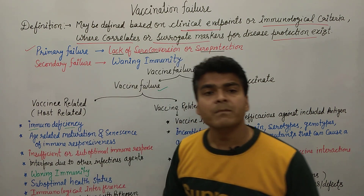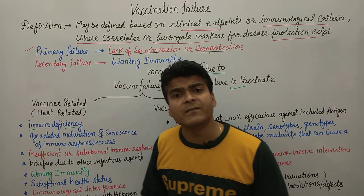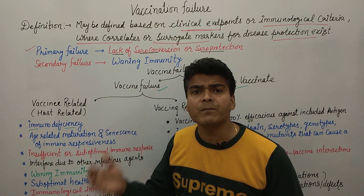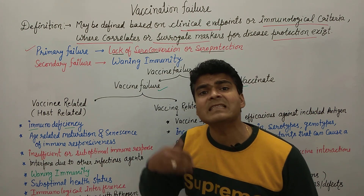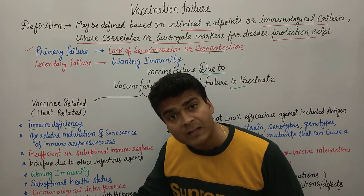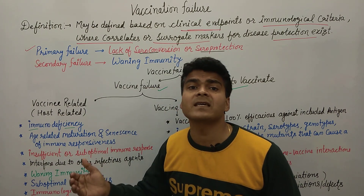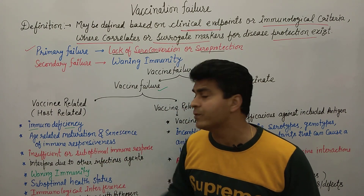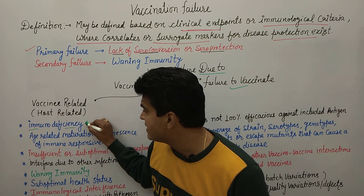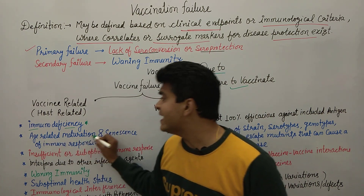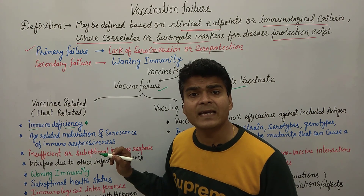Immunodeficiency means the person has an immune deficiency — their immune power is very low. So even after giving the vaccine, immune power does not develop in the person. This is one reason. Then there is age-related maturation, meaning the person's age is such that even after giving the vaccine, no further immune development has occurred.